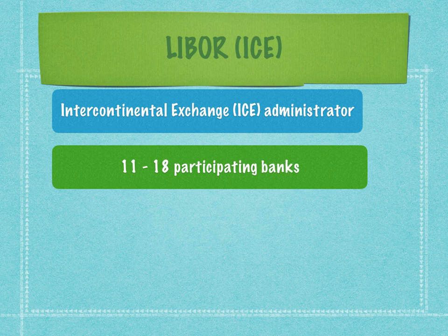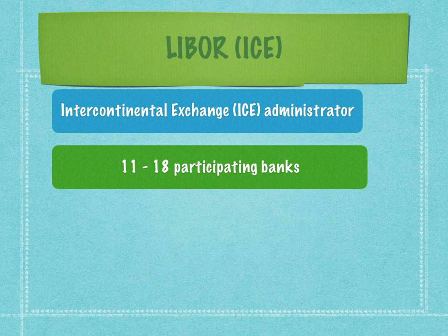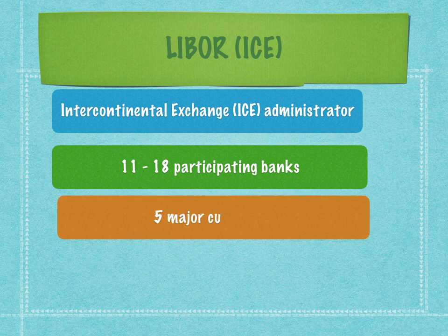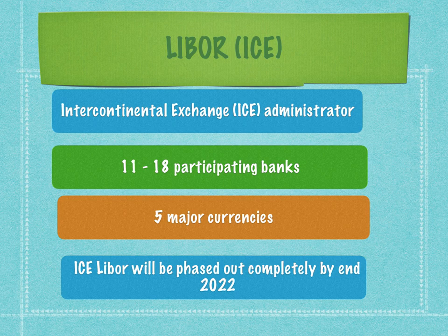ICE decided to create a larger pool of participating banks — between 11 to 18 banks. When there is such a larger pool, the depth of data from each bank is very high and the breadth of participation is very wide, making it impossible to fudge or rig the rate. ICE LIBOR was in use by banks from 2013 right through to 2022 across five major currencies, but by end of 2022, ICE LIBOR will be completely phased out.